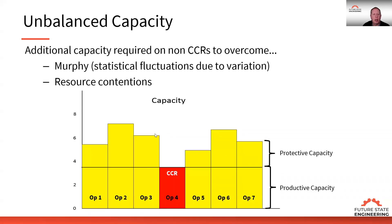If we look at a system, a system is made up of different processes, and those different processes have different capacities. So in an unbalanced system, we have one resource that dictates the flow — we call that productive capacity. Other resources that have more capacity than that have protective capacity.